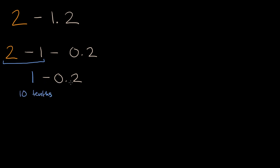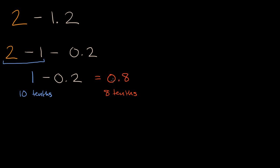We're going to subtract two-tenths. If we have ten-tenths and we take away two-tenths, that's going to give us eight-tenths. That is the same thing as 0.8, or eight-tenths.